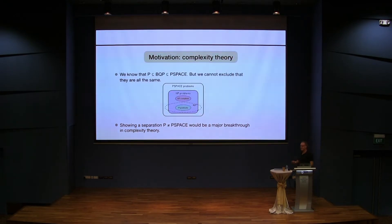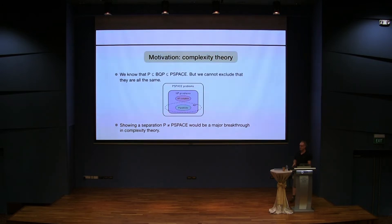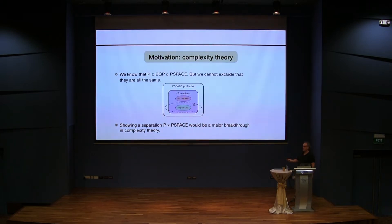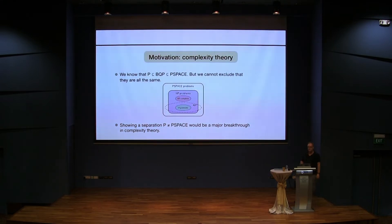The P problems are those that we believe classical computers can efficiently solve, and BQP would be the same for quantum computers. We know that P is in BQP — quantum computers can also do classical computations — and then they're contained in the larger class PSPACE, which is just problems that can be solved in polynomial space. The question of whether P equals NP is still open, and if we could show that there exists a problem that can be solved by a quantum computer but not by a classical computer, that would solve this long-standing open problem. This tells us why this is a difficult question from the theory side.